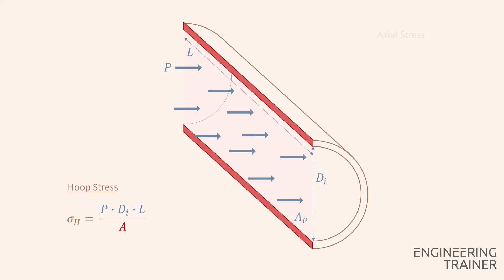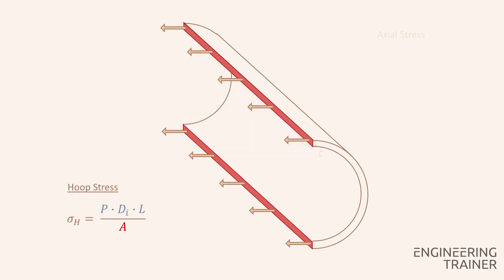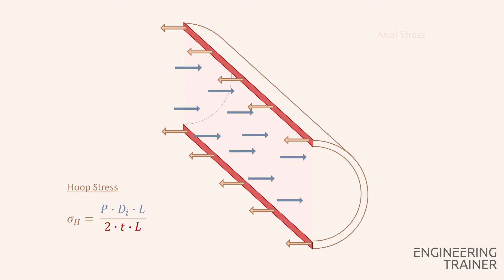The numerator of the equation now becomes the pressure times the inner diameter times the length. The area of the material stress is formed by the pipe thickness T and again the length of the pipe piece. We also have to take into account a factor of 2 for both the top and the bottom. The area of material stress can now be expressed as 2 times the thickness times the length. In our equation we can cross off the length as this is present in both the numerator and the denominator. The equation for the hoop stress becomes the pressure times the inner diameter divided by 2 times the pipe thickness.